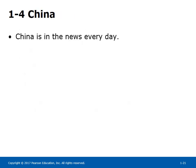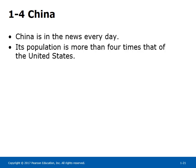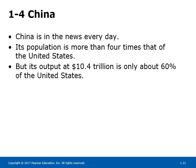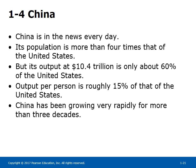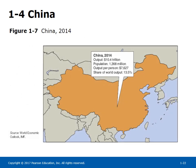China is in the news every day. Its population is more than four times that of the United States, but its output at $10.4 trillion is only about 60% of the United States. Output per person is roughly 15% of that of the United States. China has been growing very rapidly for more than three decades. A map of China and economic statistics for 2014 are shown in Figure 1-7. Output in 2014 was $10.4 trillion, making it the second largest economy in the world. China's output per person at market exchange rates was $7,627, only 15% of that of the United States, and output as a share of world output was 13.5%.